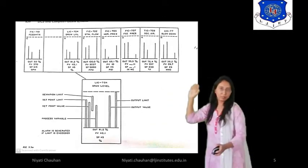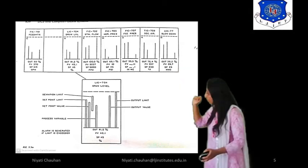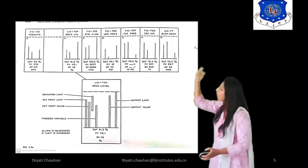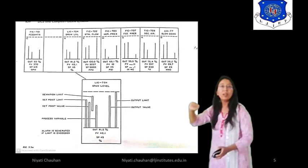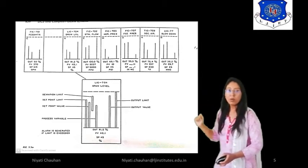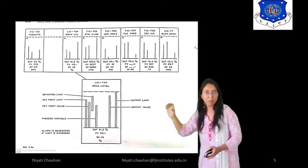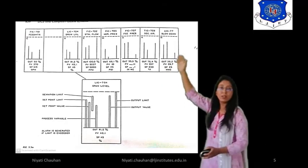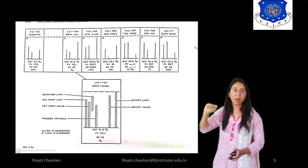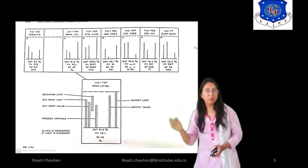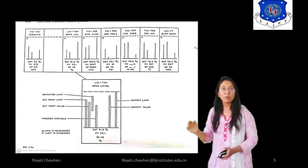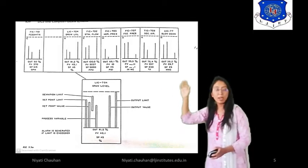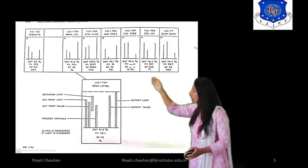In the graph, you can see different processes running in the plant. PIC means Pressure Indicator and Controller, TIC means Temperature Indicator and Controller, and AIC means Analyzer Indicator and Controller. For each different process, a given instrument tag number is assigned — for example, 701, 704, 705. Through the tag number, you can see the process value, set point value, percentage value, and its units.